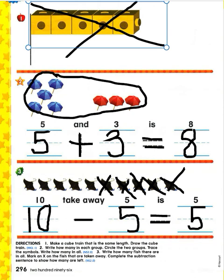Did you solve them? Good job. Number two was five and three is eight — you should have written five plus three equals eight and circled the two groups to show that we're bringing them together for addition. Then for number three, the subtraction sentence was ten take away five. Ten minus five, or ten take away five, is five. You should have crossed off five and shown that there were five left over.